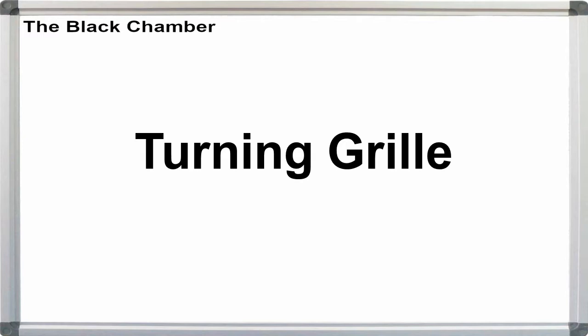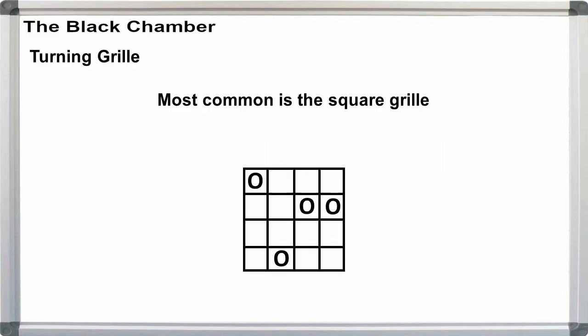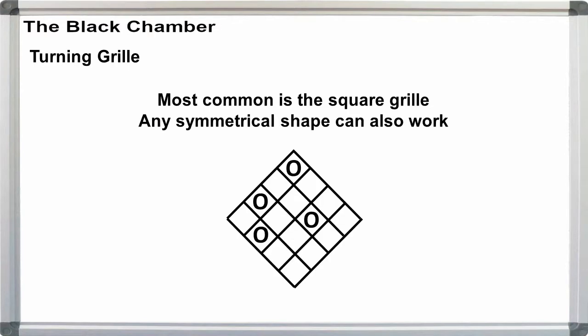Turning or rotating grill. The most common form of the rotating grill used in recreational cryptography is the square type, although anything with symmetry can work too, from diamonds, rectangles, pentagons, or hexagons.